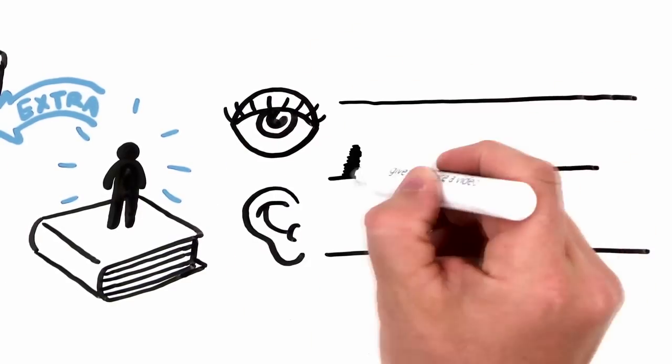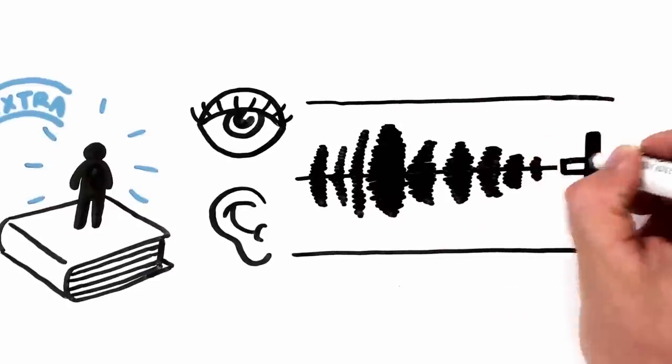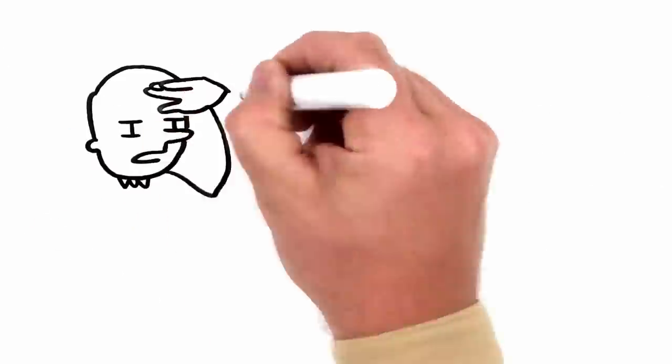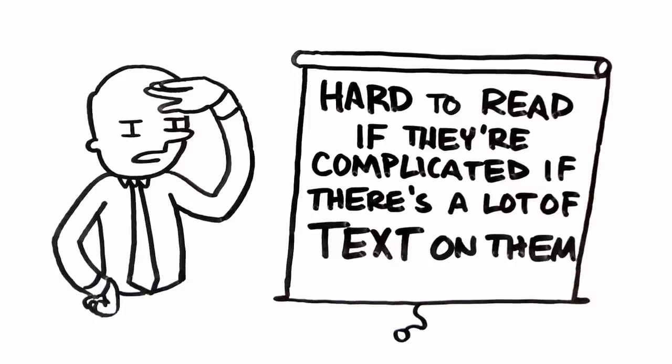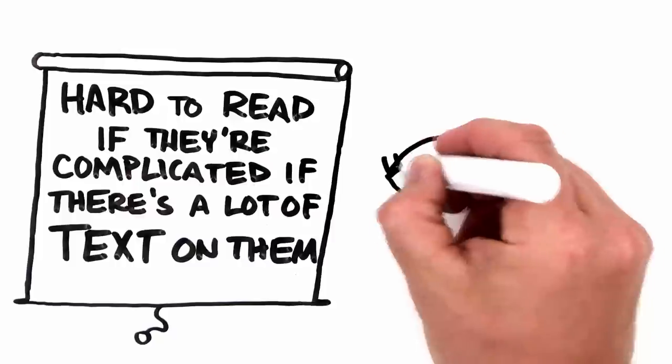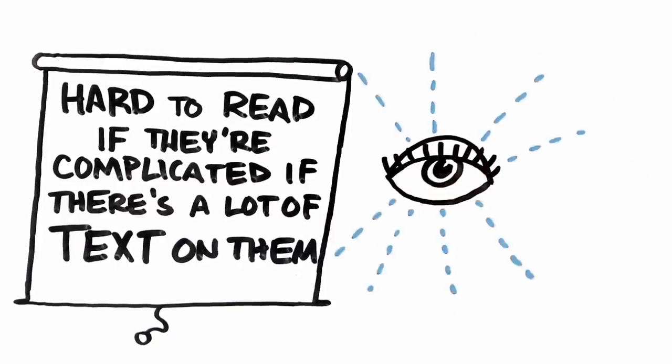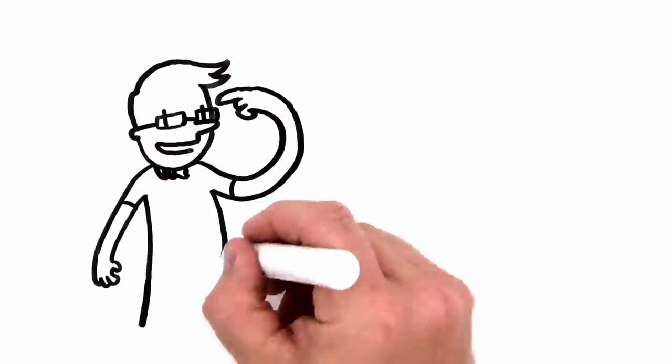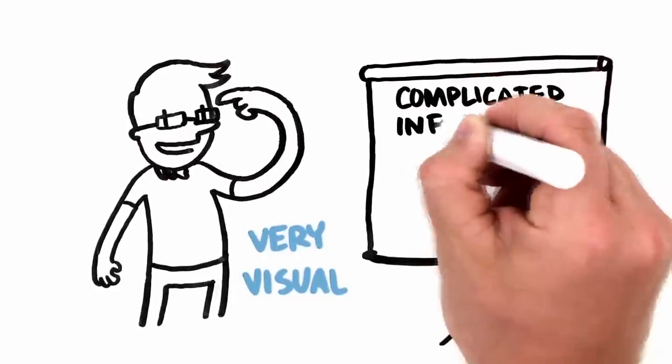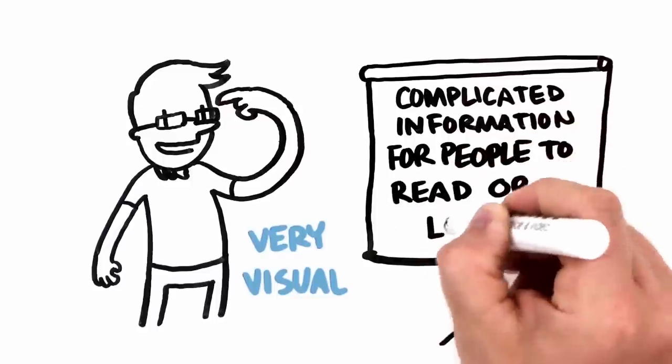But if the slides are hard to read, if they're complicated, if there's a lot of text on them, then the visual channel is going to be distracting. The visual channel trumps auditory. We are very visual creatures, so if you have complicated information for people to read or look at, then they're not going to be listening to you anymore.